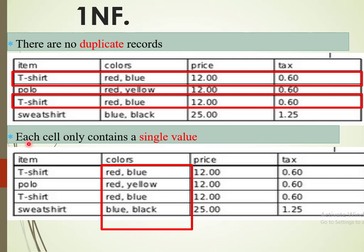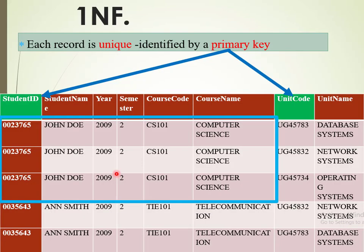The next rule is that each cell should only contain a single value. If you look at the field called colors, you can see it is accommodating more than one value in a given cell. To have our relation in 1NF, we need to get rid of these and ensure that each and every cell has one single value.